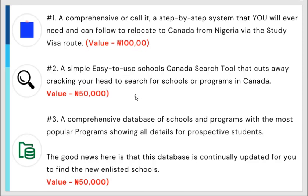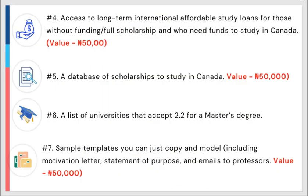Number two: you get a simple easy-to-use school Canada search tool that helps you search for schools and programs of your choice in Canada — valued at 50,000 Naira. Number three: you get a comprehensive database of schools and programs with the most popular programs showing all student details. This database is continually updated for you to find newly enlisted schools — valued at 50,000 Naira. Number four: you get access to long-term international affordable study loans and the secret to getting full scholarships to study in Canada — valued at 50,000 Naira.